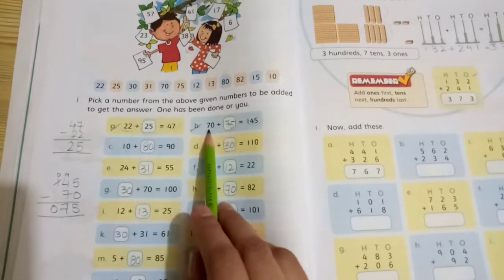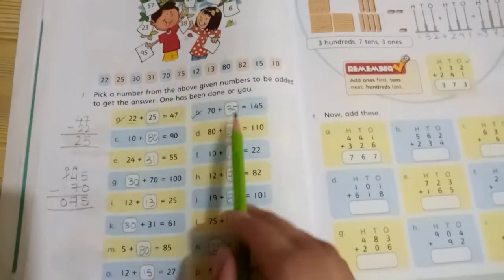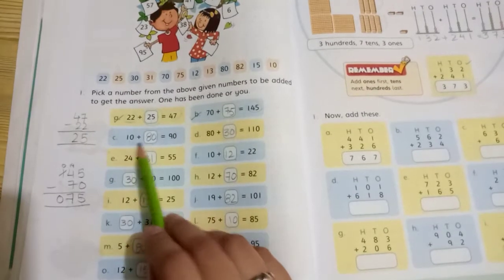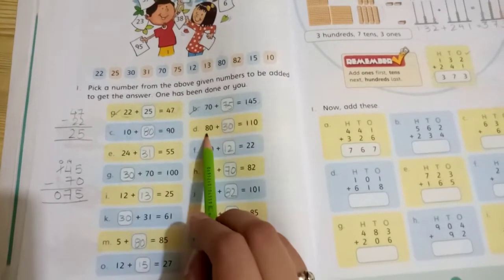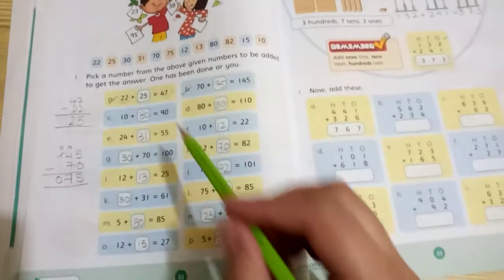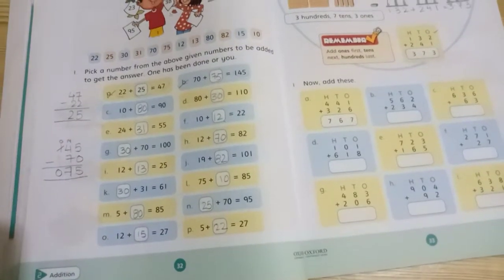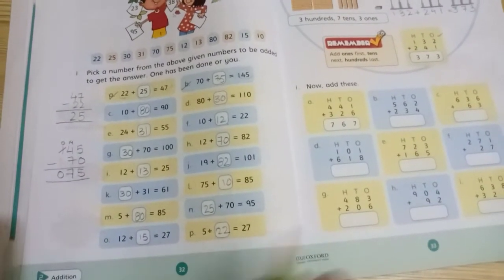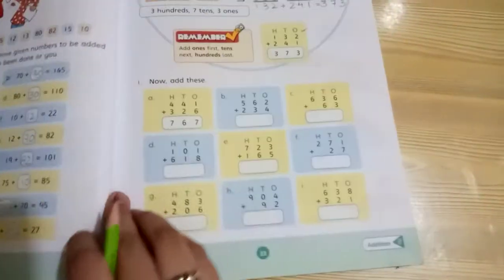145 minus 70, cut it, 75 remains. So answer is 90. Cut 10, so 80. Cut 110, so 30 remains. Similarly, you will cut the smaller number from the bigger number to get the answer, and write it in the box. Understand? Next page.